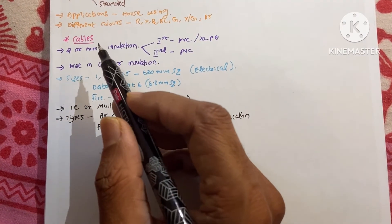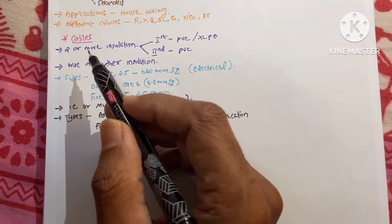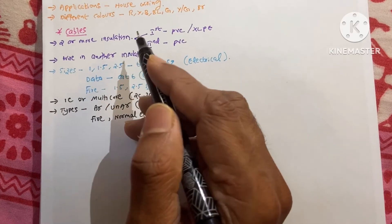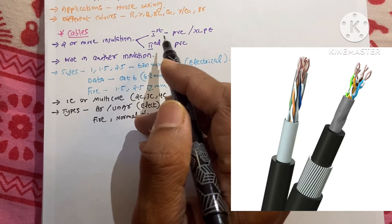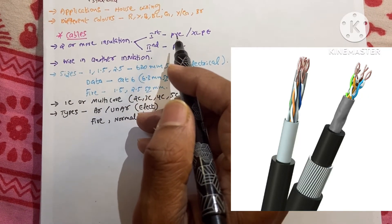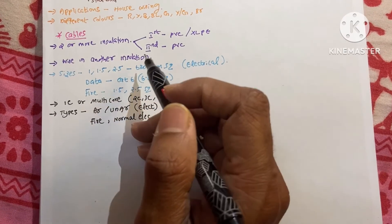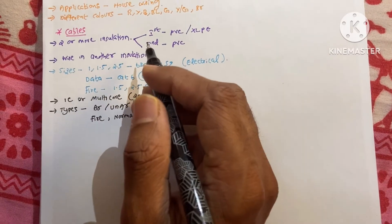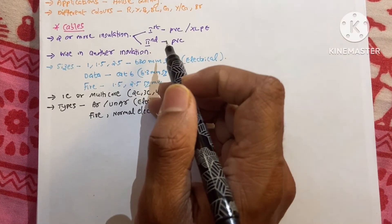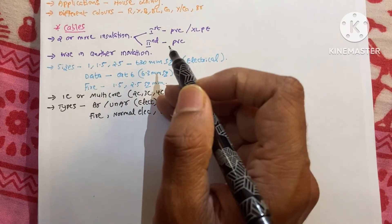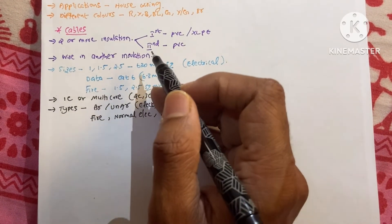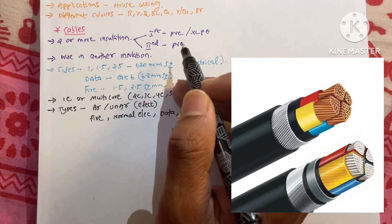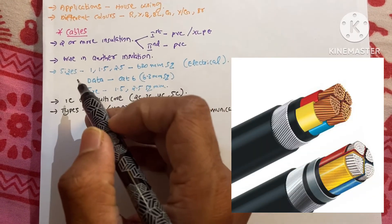And next about cables. In cables, there are two or more insulations. The first insulation of the conductor is PVC or XLPE. And the second insulation will be PVC. A normal cable which is unarmored would have two insulations. But if it is an armored cable, then it would have four insulations.